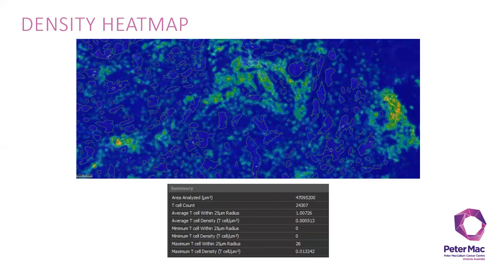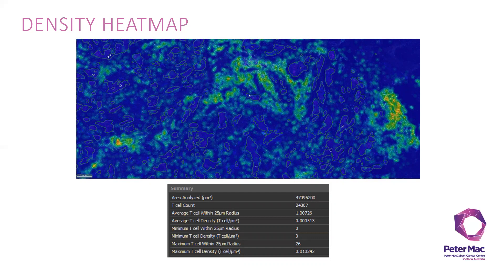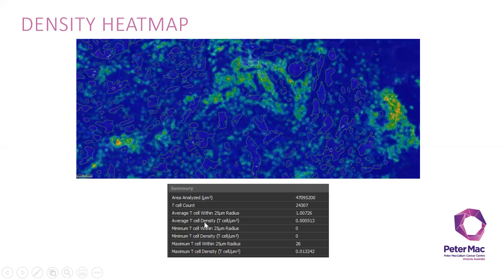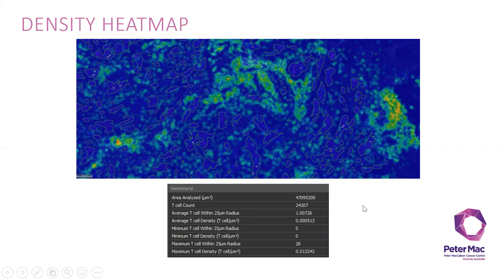From here, you can see it's mostly quite cold. It doesn't have much dense T cell population here. It will show you the average T cells within 25 microns, the T cell density per micron square, and the minimum and maximum number as well.